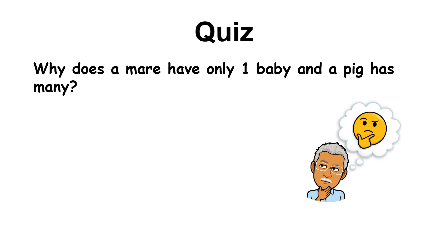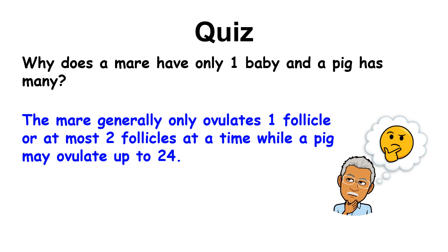For our assessment on this topic: why does a mare have only one baby and a pig has many? The reason is that the mare generally ovulates one follicle, or at most two follicles at a time, while a pig may ovulate up to 24 follicles. That is why the mare will usually give birth to one foal, while a sow can give birth to as many as 24 piglets per farrowing.